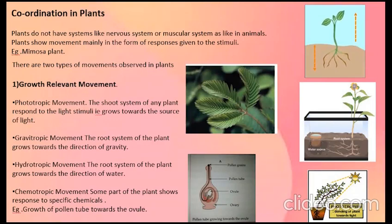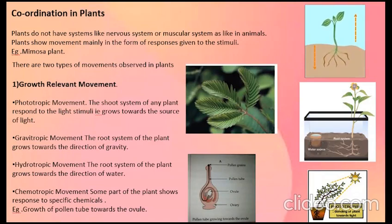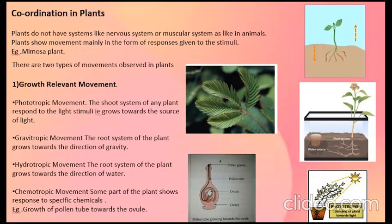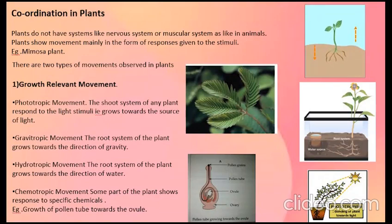Let us revise coordination in plants. Plants do not have any systems like the nervous system or muscular system as animals do. Then how do plants bring about movement? Plants show movement mainly in the form of responses given to stimuli. For example, when we touch the mimosa plant, also called the touch-me-not plant, it closes itself — that means it is showing a response to our touch.